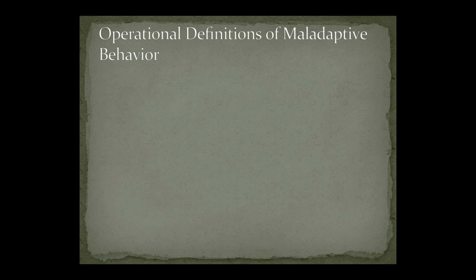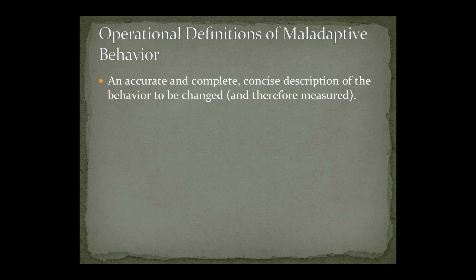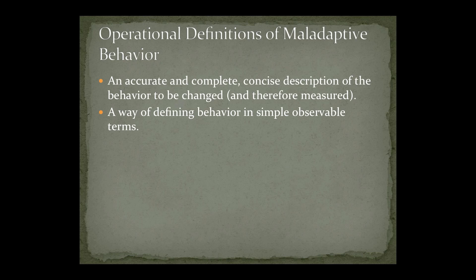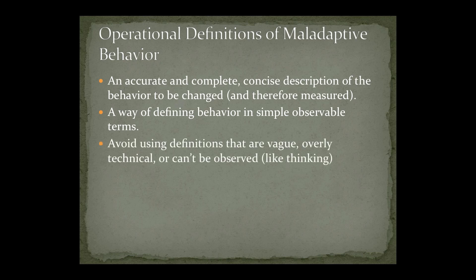Integral to the behavior treatment plan are operational definitions. An operational definition is an accurate, complete, and concise description of the behavior to be changed and measured. It is a way of defining behavior in simple, observable terms. We avoid using definitions that are vague, overly technical, or can't be observed, like thinking.